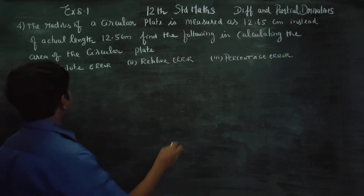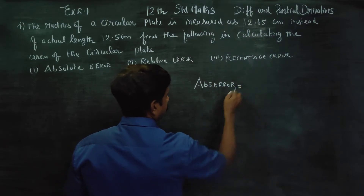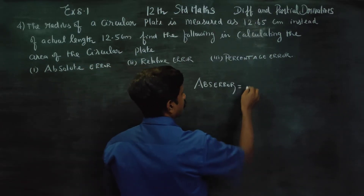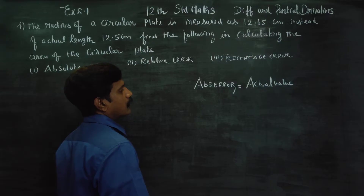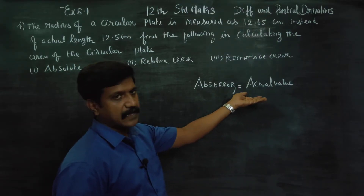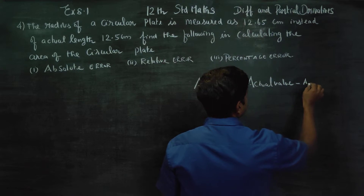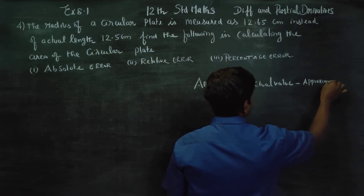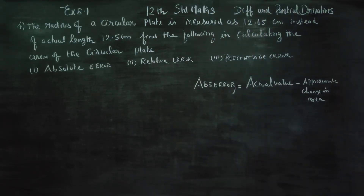First subdivision: absolute error. The absolute error formula is: actual difference in the area minus approximate change in the area. So absolute error equals actual change in the area minus approximate change in the area.